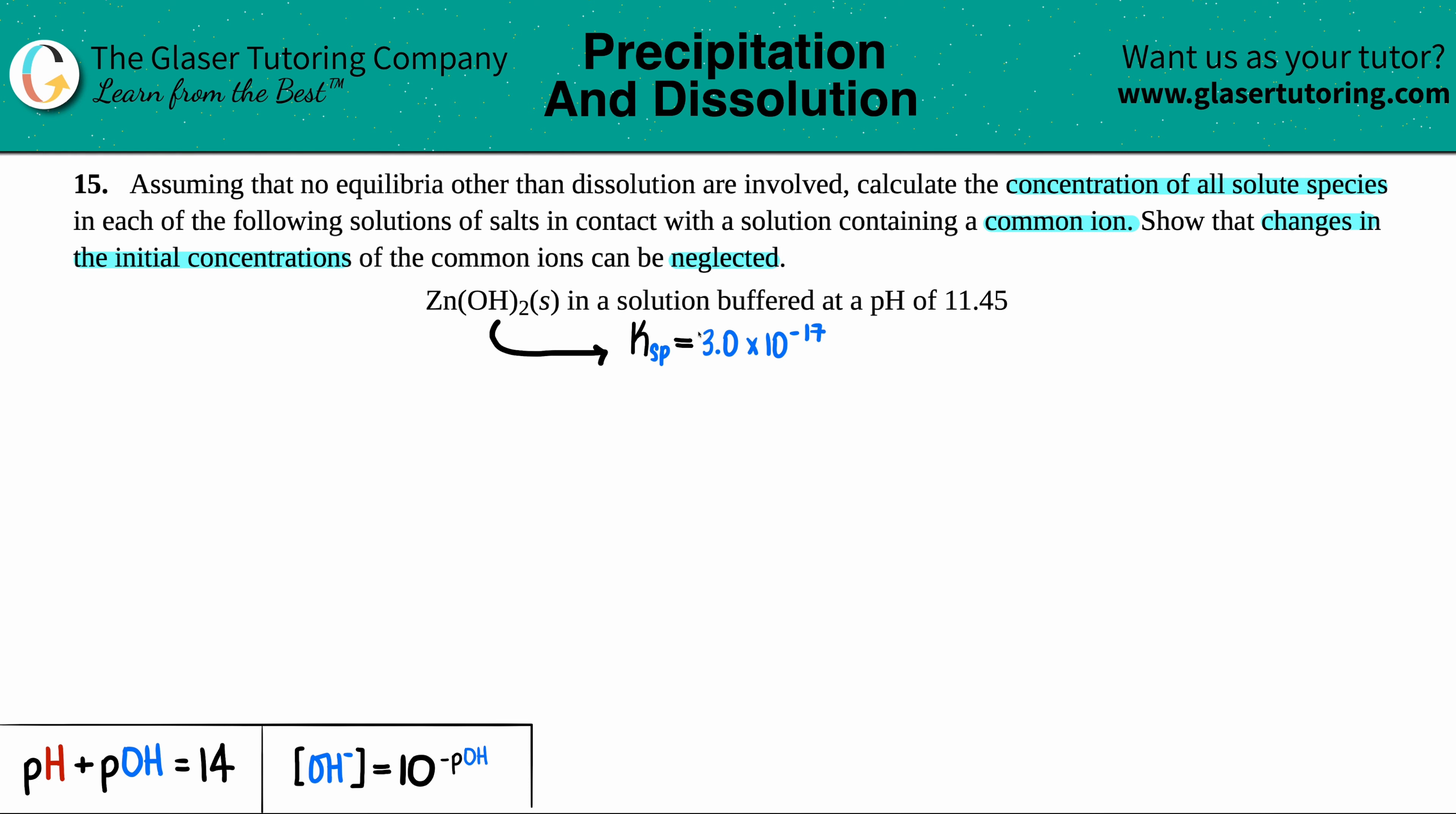Now this question would not be able to be done without the solubility product, the Ksp, of the solid. So Zn(OH)₂'s Ksp is roughly 3.0 times 10 to the negative 17th. I looked through five different textbooks because this Ksp wasn't matching up. Your textbook might have a different value than this number, but we're just going to go with 3.0 times 10 to the negative 17th.